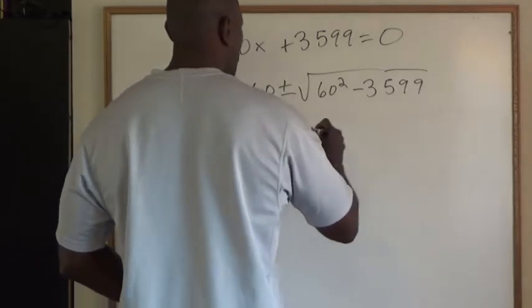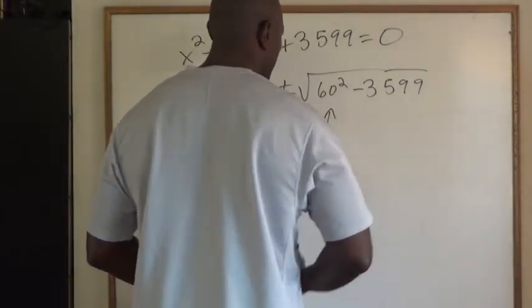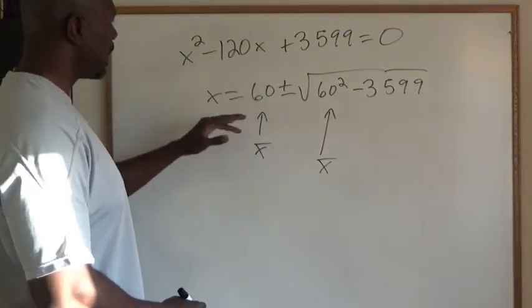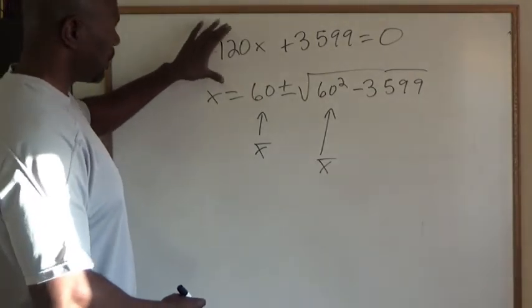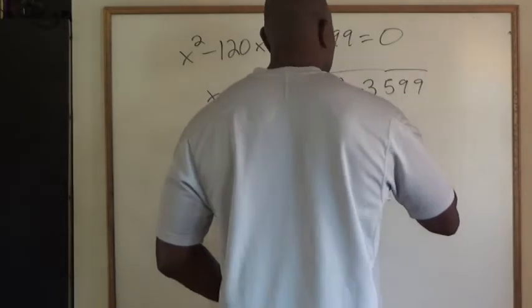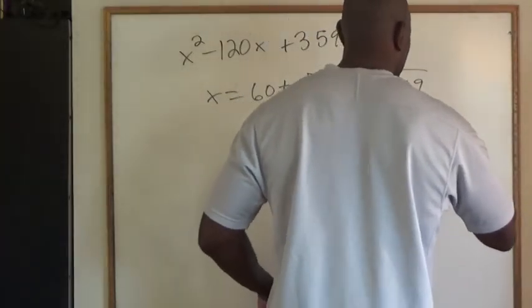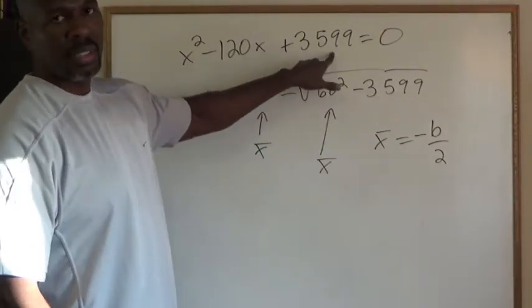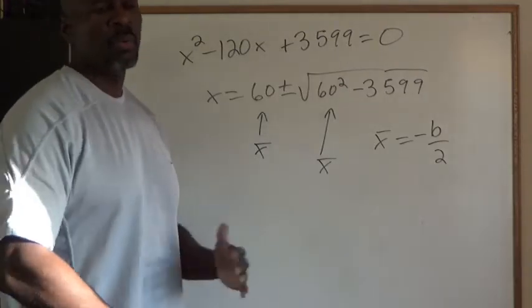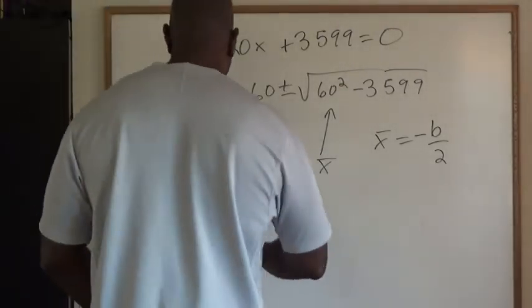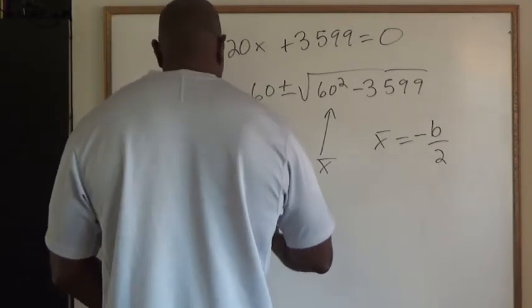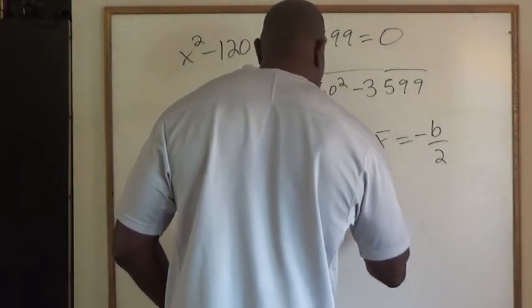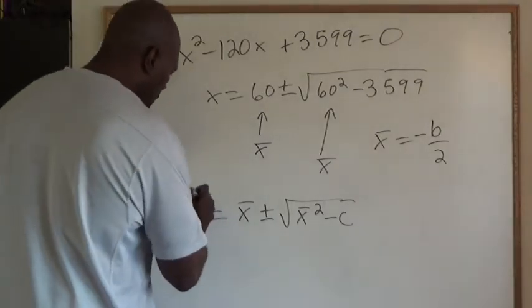Now this number 60, this is what we call X bar. And again X bar, it's just half the coefficient of X, well the opposite sign. So it's the opposite sign of the coefficient of X. So X bar technically is negative B over 2. Now this number here, this is what we traditionally call C in a quadratic equation. So if you want to write out what we've been doing as a formula, our formula for X would be X is X bar plus or minus the square root of X bar squared minus C. That's the new quadratic formula we've been using.